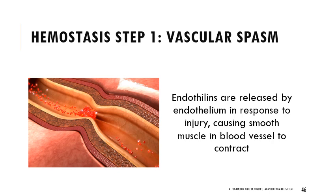The first step of hemostasis is the vascular spasm. The endothelium — cells lining the blood vessels — releases endothelins in response to an injury. Those proteins cause the smooth muscle in blood vessels to contract, reducing blood flow to the injured area.